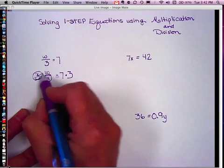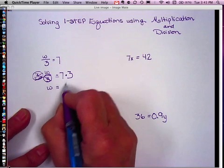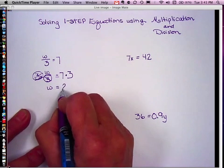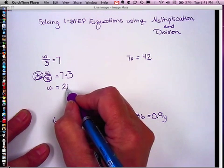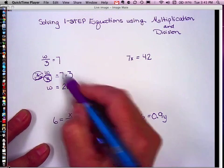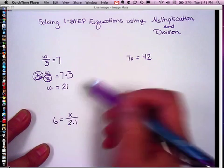So those two undo one another. My left side simplifies to w. Right side, 7 times 3 is 21. Again, always double check either mentally or by writing out a check. So when I substitute 21 in for w, 21 divided by 3 is 7. So it does check.